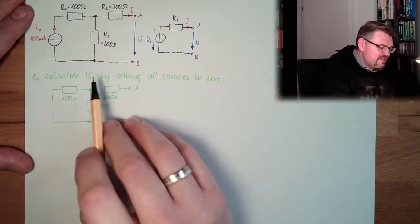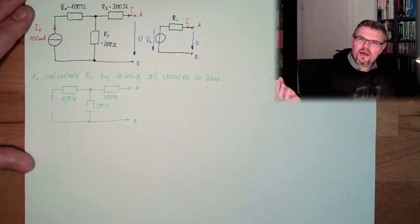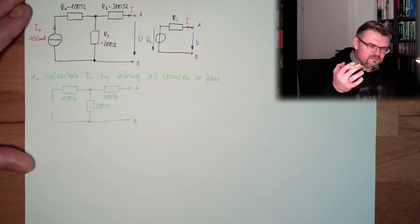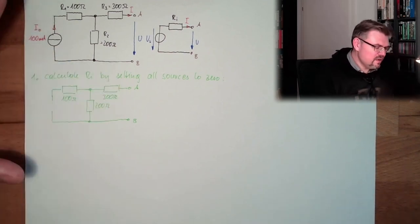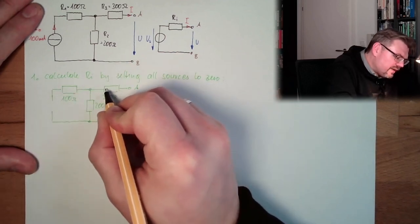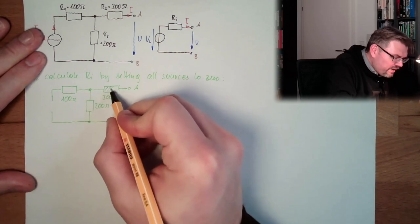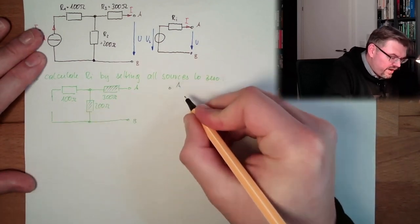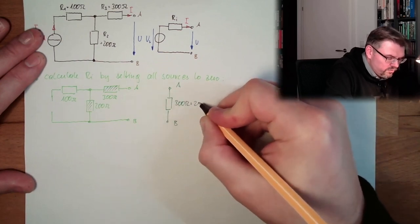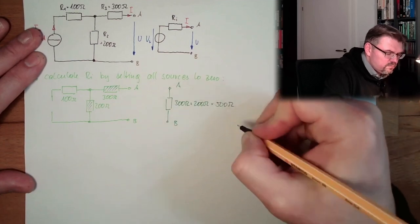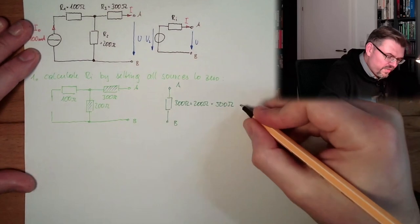We need to replace this with one single resistor. Where there is no current, we can leave R1 out. So R2 and R3 are in series — the current cannot run through R1, so it passes through R2 and R3. We have A and B with one resistor of 300 ohms plus 200 ohms = 500 ohms. This is Ri.